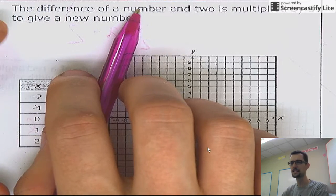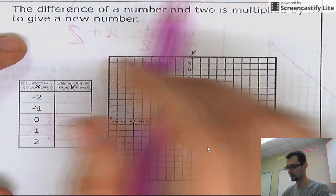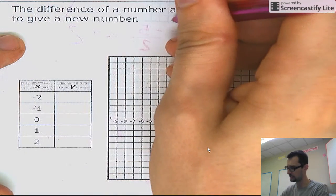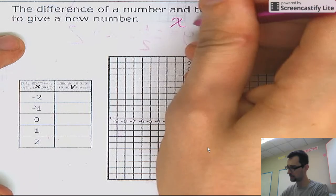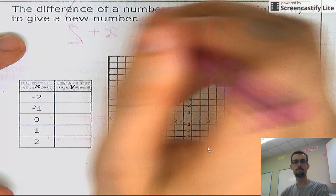I think it's saying, think of a number and then subtract two from that number. I think it's saying, think of a number, find the difference between that number and two.